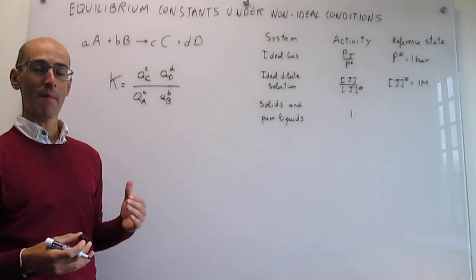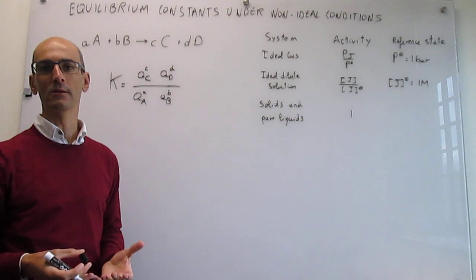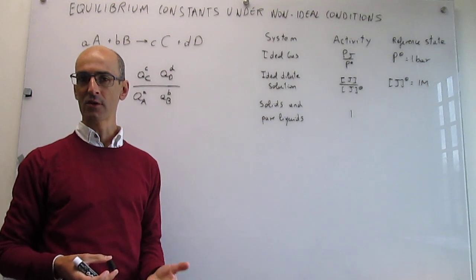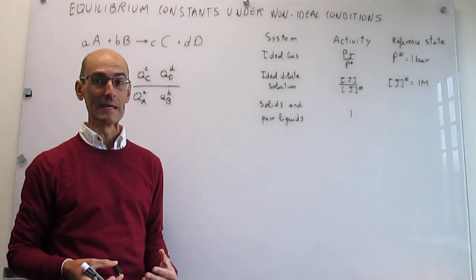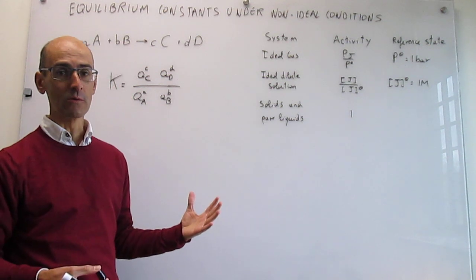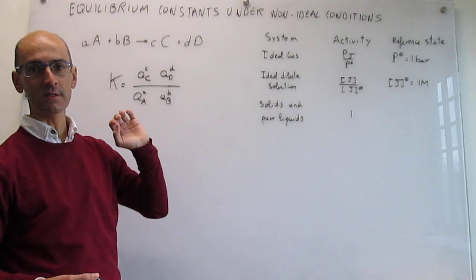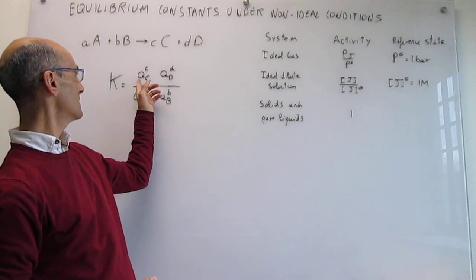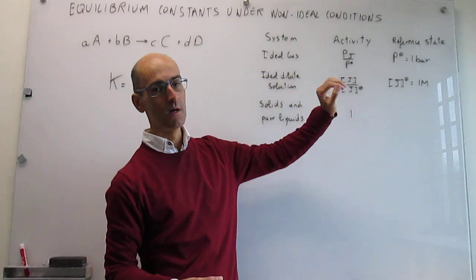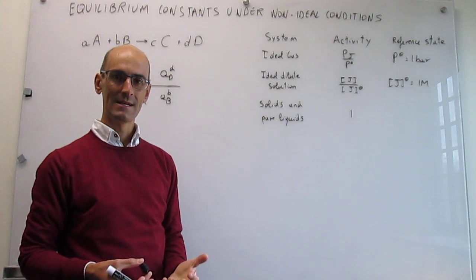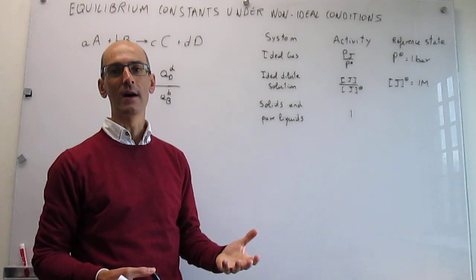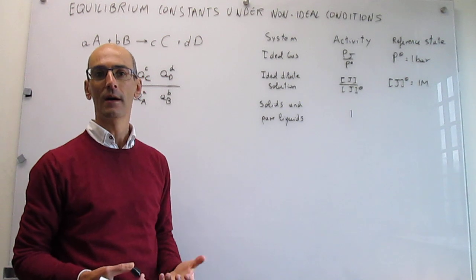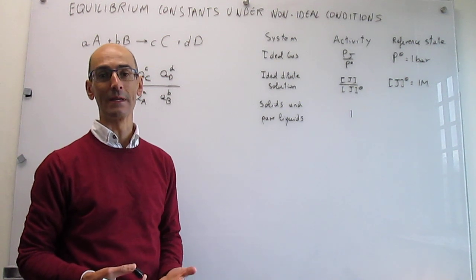What we do next is map these activities, which are placeholder measures of concentration, to actual concentrations that we can determine in the lab. This is the table we use for that mapping. If any of these species turns out to be a gas, we assume ideal gas conditions and say that the activity is simply the ratio of the partial pressure of that gas under reaction conditions divided by the reference partial pressure, which by convention is taken to be one bar.